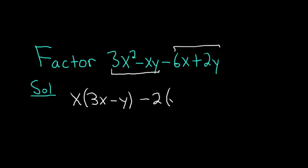And then we ask the question, what do we multiply by negative 2 in order to get negative 6x? Well, 3x. Then what do we multiply by negative 2 in order to get a positive 2y? Looks like minus y. So negative 2 times minus y is positive 2y.